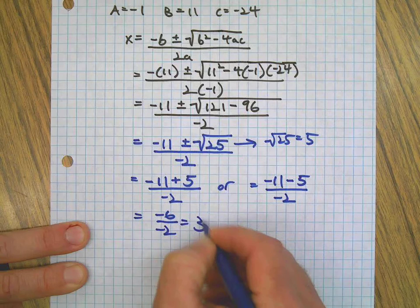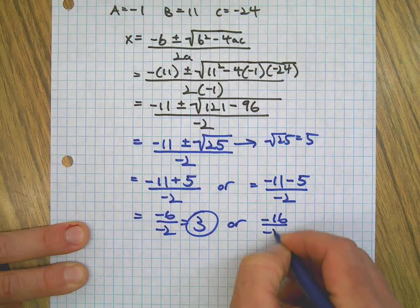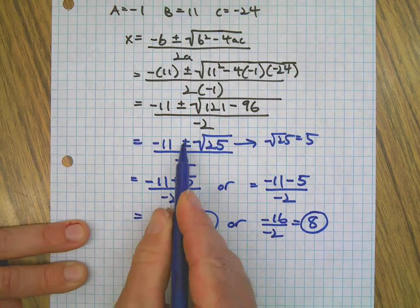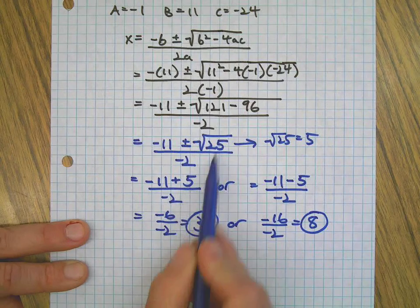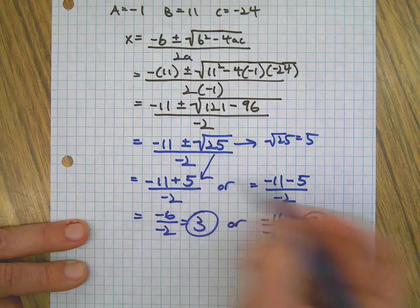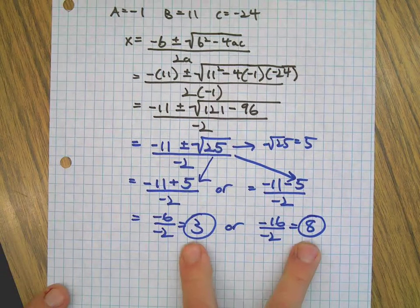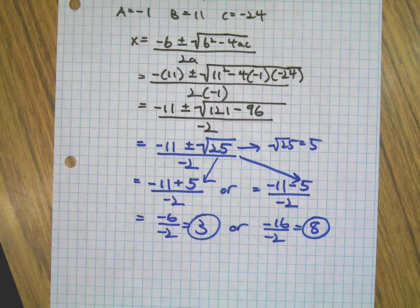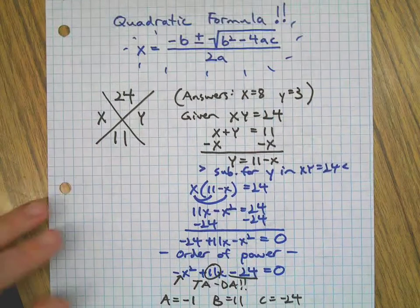Negative 6 over negative 2 equals 3. Negative 16 over negative 2 equals 8. So the plus or minus means we have two options here, right? We have a positive square root of 25 or a negative square root of 25, which is what gives us our two possible answers here. And if we go back and check in with what we knew the original answer was, we knew that was right.